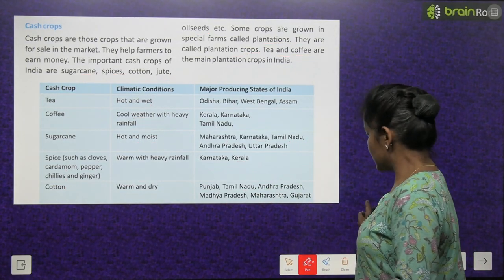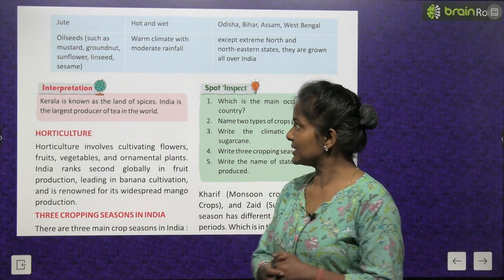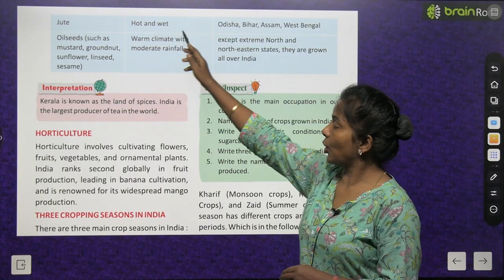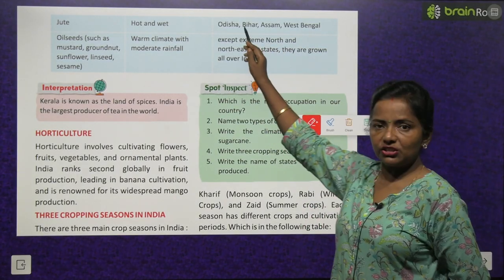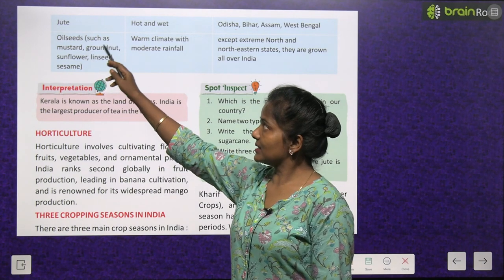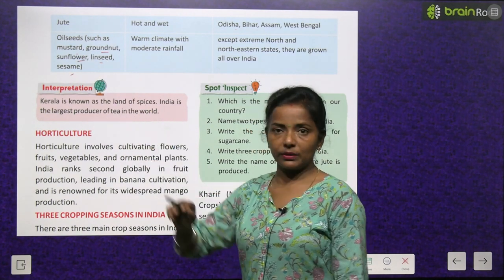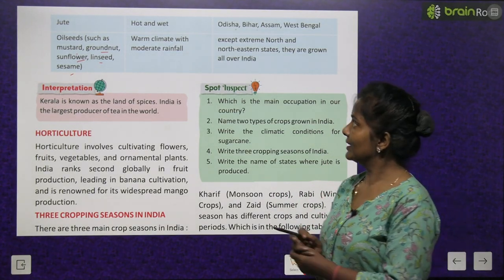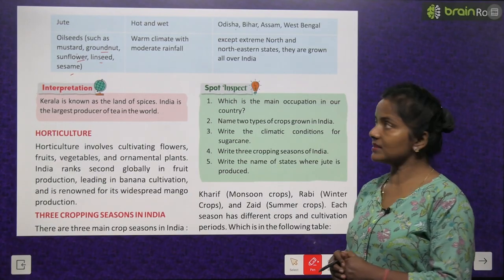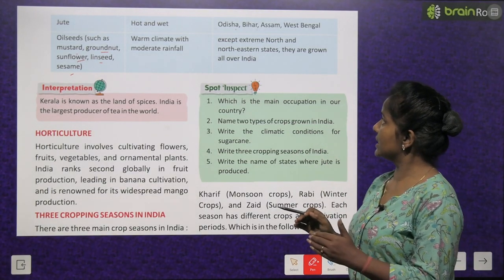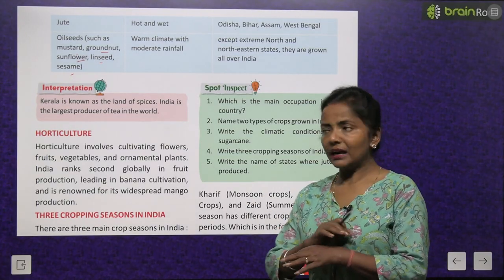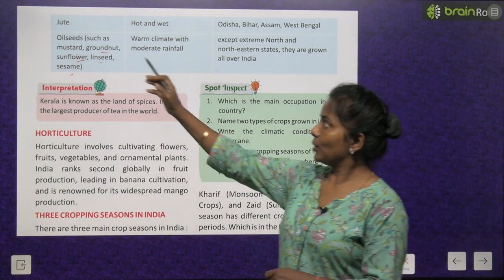Jute requires hot and wet climate; major states: Odisha, Bihar, Assam and West Bengal. Oilseeds — such as mustard, groundnuts, sunflower, linseed and sesame — need warm climate with moderate rainfall and are grown all over India except the extreme north and north-eastern states. Kerala is known as the land of spices, and India is the largest producer of tea in the world.